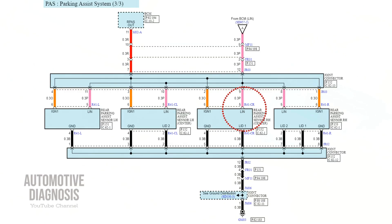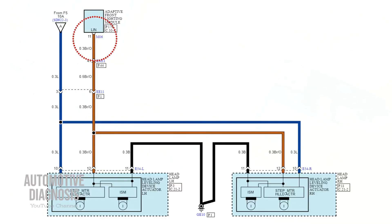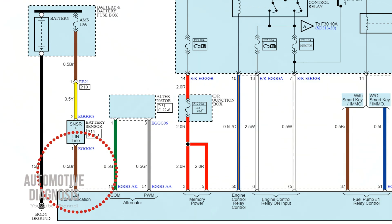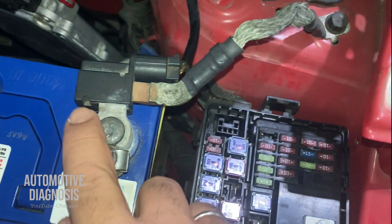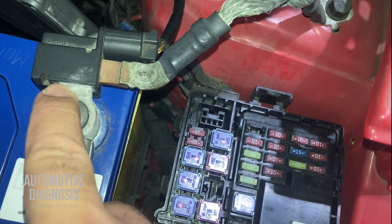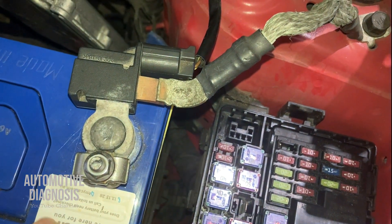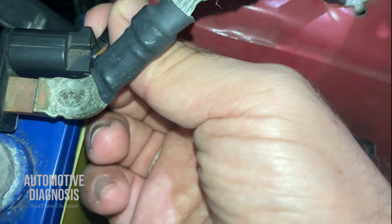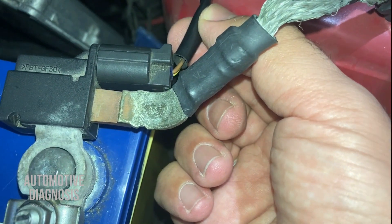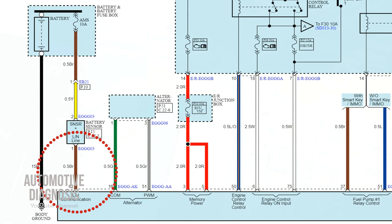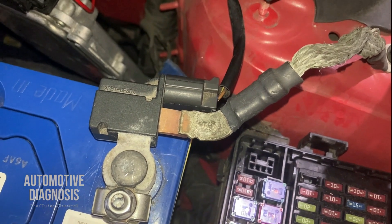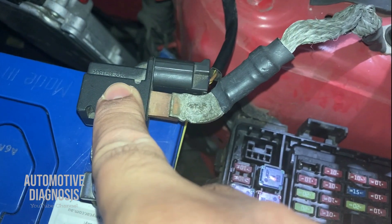LIN bus can be used on different systems. On this car it's used on the rear parking assist system; on another it's used on the adaptive front lighting system. On the car I'm diagnosing right now, LIN bus is used for the battery sensor, which communicates with the engine control module. Looking at the wiring diagram, the yellow wire connects to the battery and the brown wire is the LIN bus connected to the ECM — so ECM is the master node and the battery sensor is the slave node.